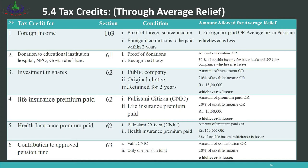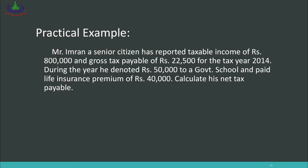Number 6: Contribution to an approved pension fund — you must have a valid CNIC, and contributions to a pension fund entitle you to a tax credit. Limits are also prescribed here. Now we look at a practical example related to tax credits and tax rebates.